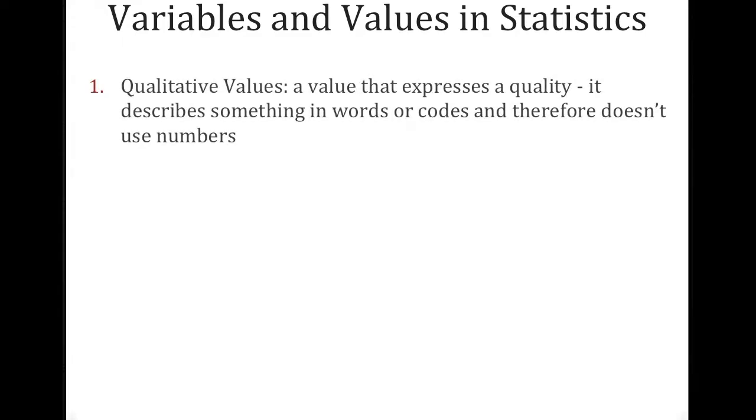We also have variables and different types of values in stats. The first thing that I'm going to teach you is qualitative values. So the word is quality, a value that expresses quality. So it describes something in words or codes, no numbers. Examples would be eye color, color of hair, favorite subject, things that have a word definition to them.